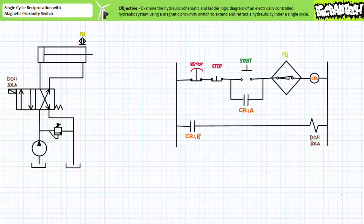Such an action is commonly known as a single cycle reciprocation. Additionally we'll introduce a couple problems with our system and see if we can predict this system's response given these input scenarios.